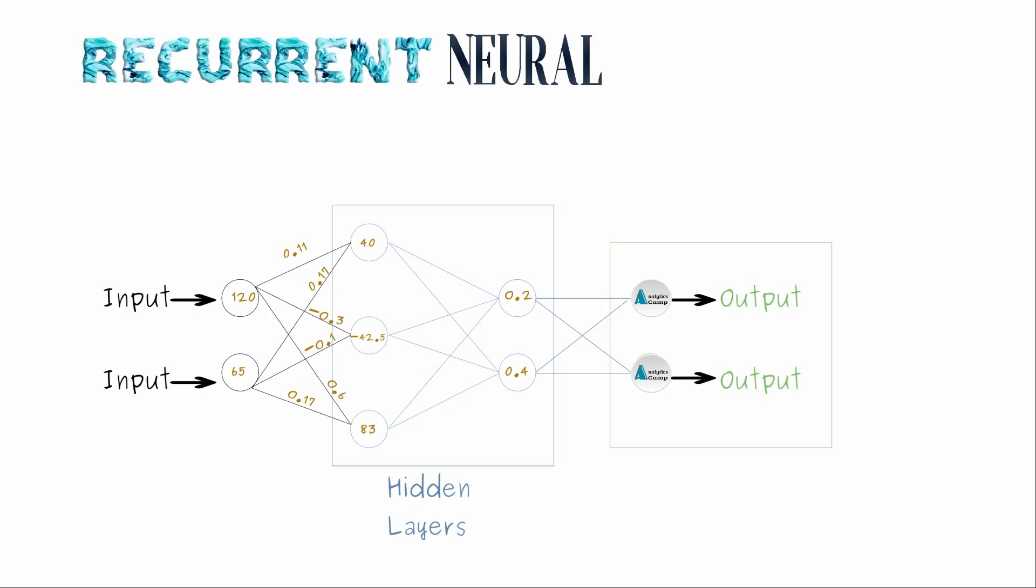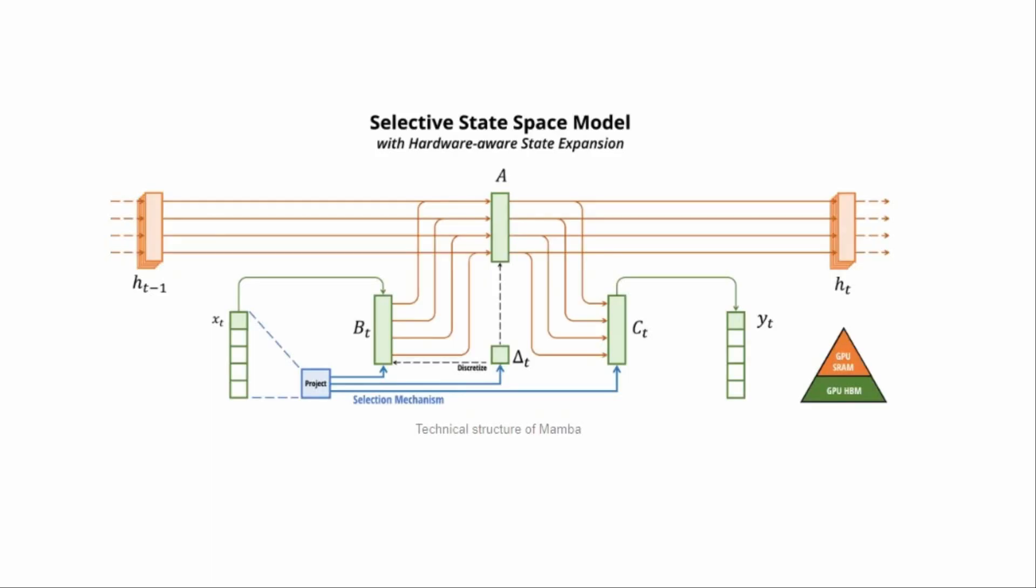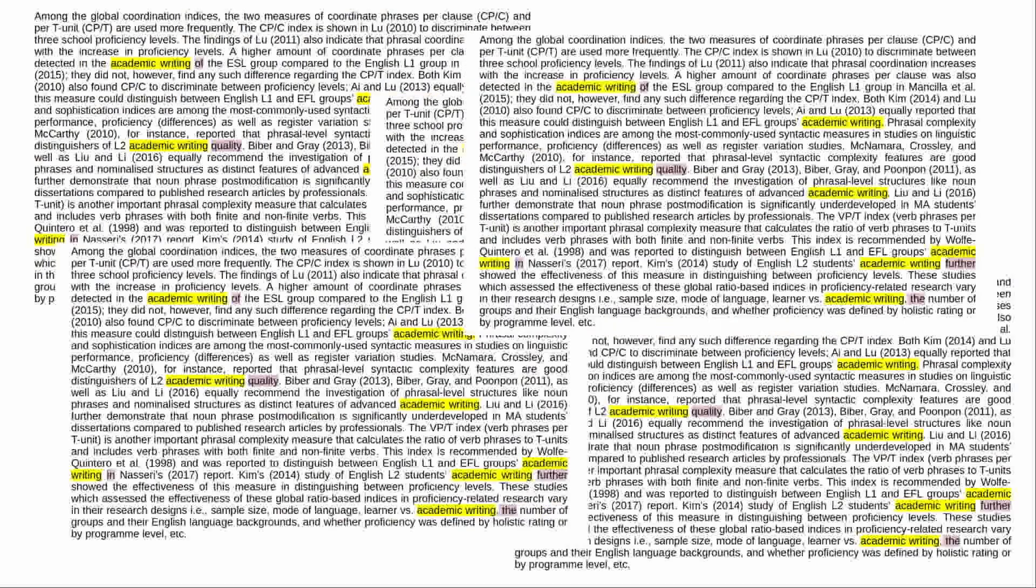State space models are a type of recurrent neural networks. This state space acts as an internal memory to remember what the model has learned so far, but they have limited space in the hidden state so they cannot remember large chunks of information.